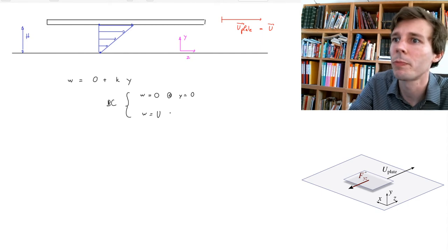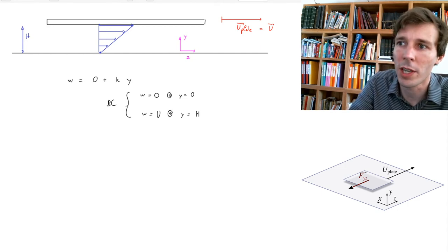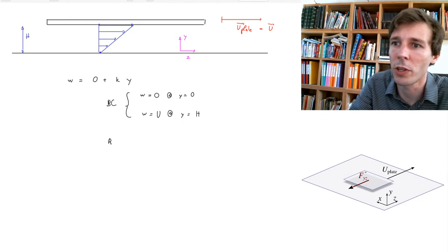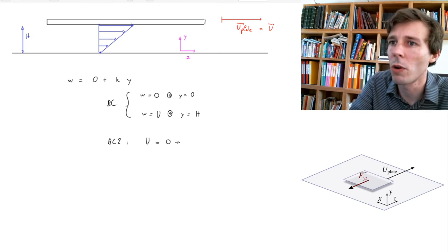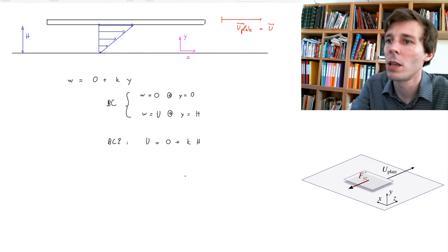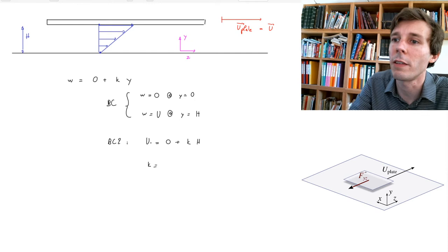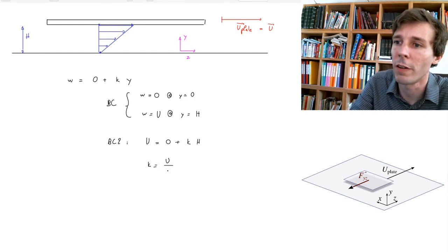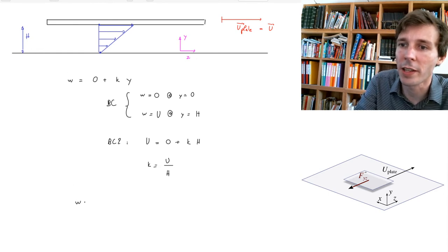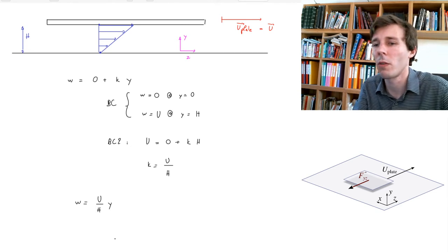So w equals U at y equals H. This second boundary condition allows us to quantify k. Applying it: U equals zero plus k times H, so k equals U divided by H. Plugging back into the original expression, we get w equals (U/H) times y.